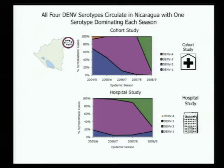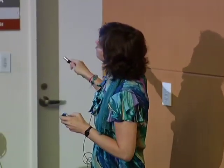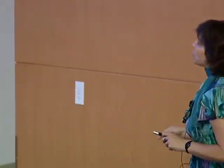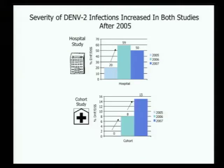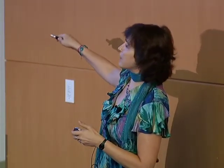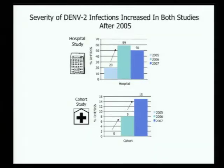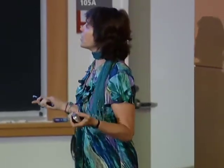An interesting feature of Nicaragua is that while all four serotypes circulate, generally one tends to dominate in each season, which allows us to do certain studies. What we noticed, which was really curious, was that over the time frame we were studying — mostly dengue 2 — we saw a big increase in disease severity in both the hospital study and the cohort study. This is the percent classified as hemorrhagic fever and shock syndrome, and we see this big increase between 2005 and later years in both studies. Since these are very different epidemiological studies, we don't think it's a reporting bias — it's actually really happening in the country.